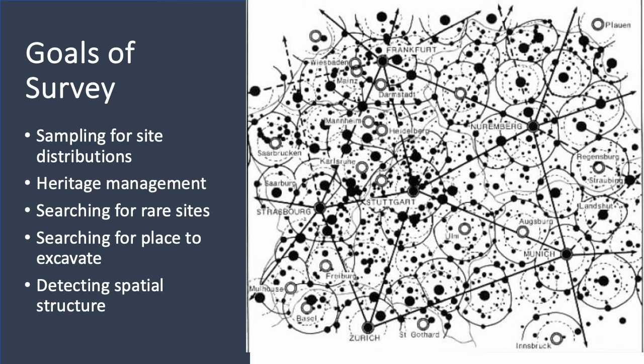In still other cases, our goal might be to search for some rare type of site or sites that are very difficult to find, in which case we have to expend our resources very carefully in a way that makes it highly likely we will find such sites. Or we might be interested in detecting spatial structure among sites in a landscape, meaning it's important to have a very thorough survey of a contiguous area so that we don't miss any sites that might be related to one another.